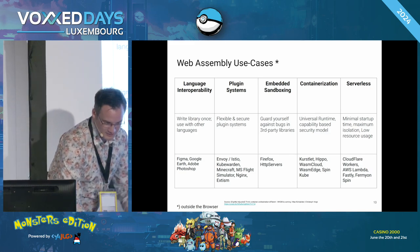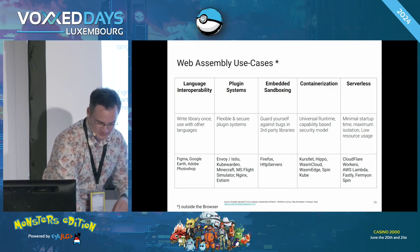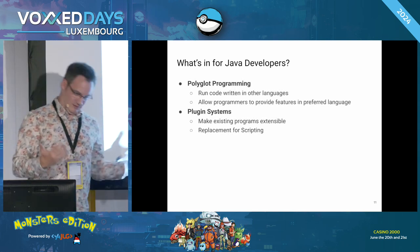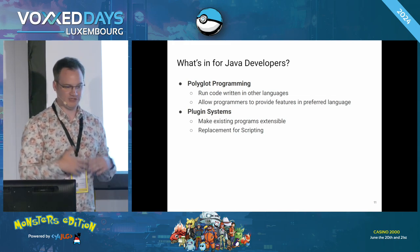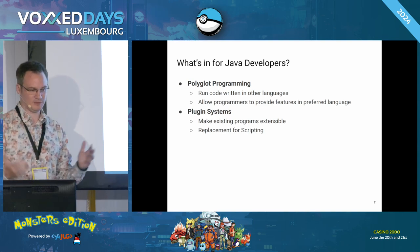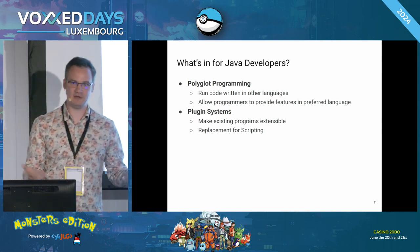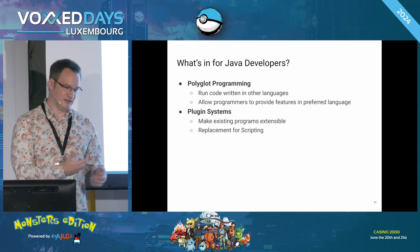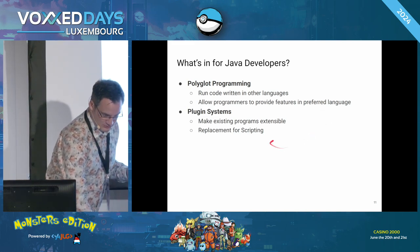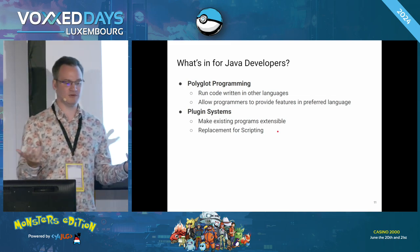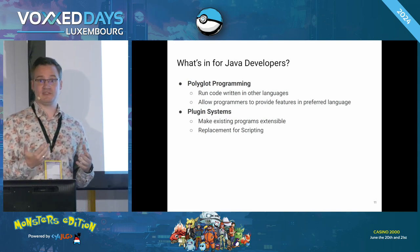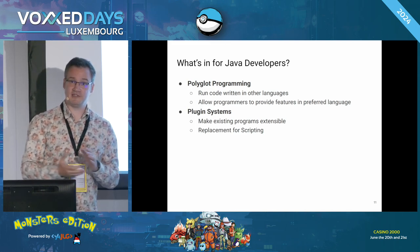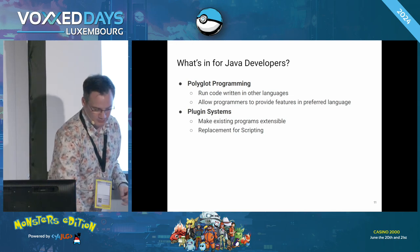The cool thing is this comes with minimal cold start times. There are WebAssembly-based serverless platforms that provide millisecond or even microsecond start time per invocation — microsecond overhead to invoke a WebAssembly logic, which is quite impressive. So now the important question is: what's in it for Java developers? We have the notion of polyglot programming — we can run code written in other languages than our own application, allowing programmers to provide features in their preferred language. You can extend a Java application with code written in Go, Python, or Rust.